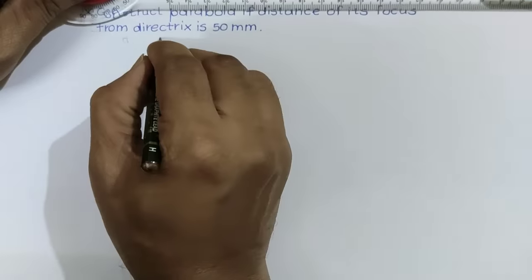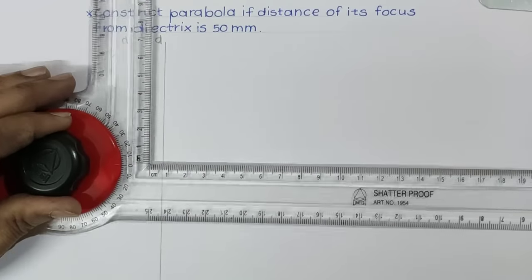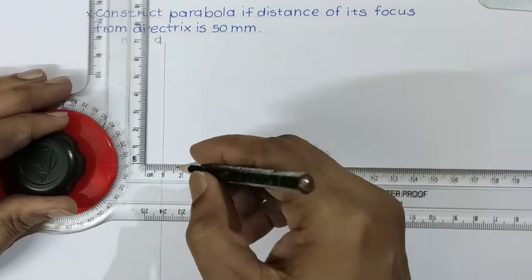Name this line as D for directrix. Then somewhere in the middle, draw horizontal line, which is the axis of parabola.